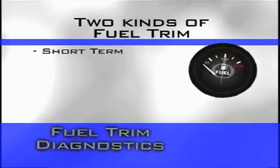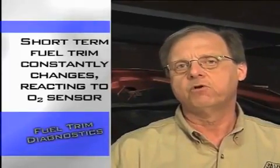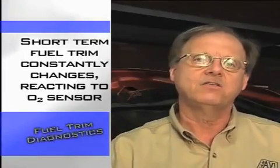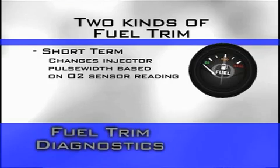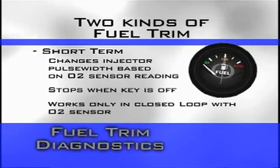We have two different Fuel Trims. One is short-term Fuel Trim — the ability to change the injector pulse width based on O2 sensor input. Short-term is a system that is working constantly, constantly changing and reacting to the O2 sensor input. If the O2 sensor stays high, you're going to see your short-term Fuel Trim try to take away fuel, reducing the injector pulse width to create a leaner situation. When you turn the key off, short-term Fuel Trim goes away. It only works when you're in closed loop, reacting directly to O2 sensor input.